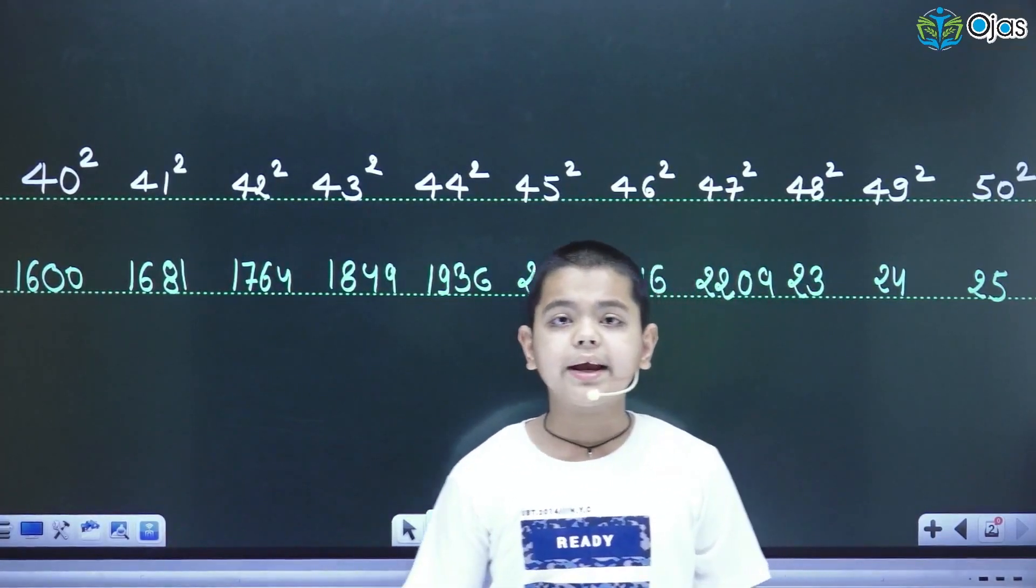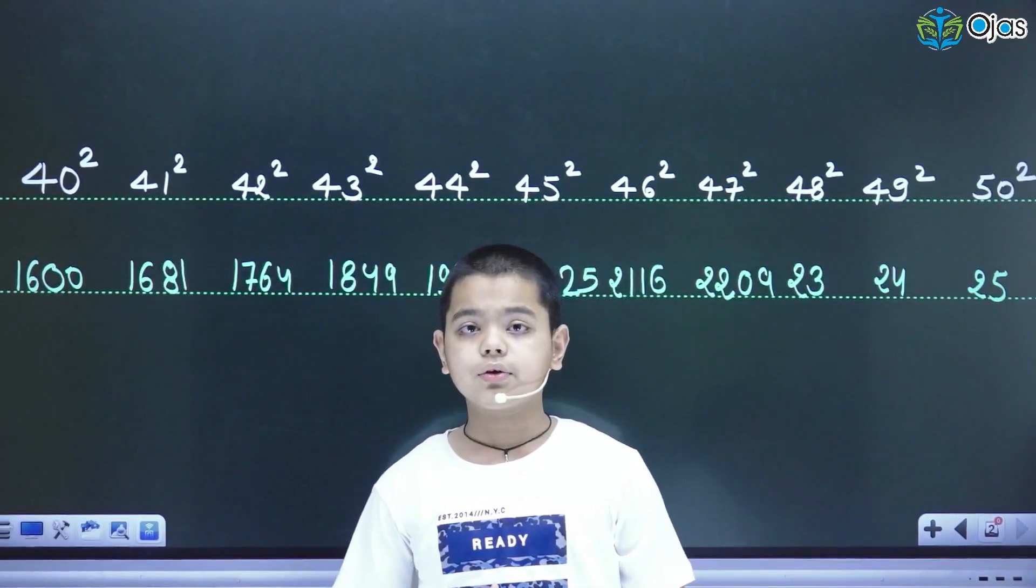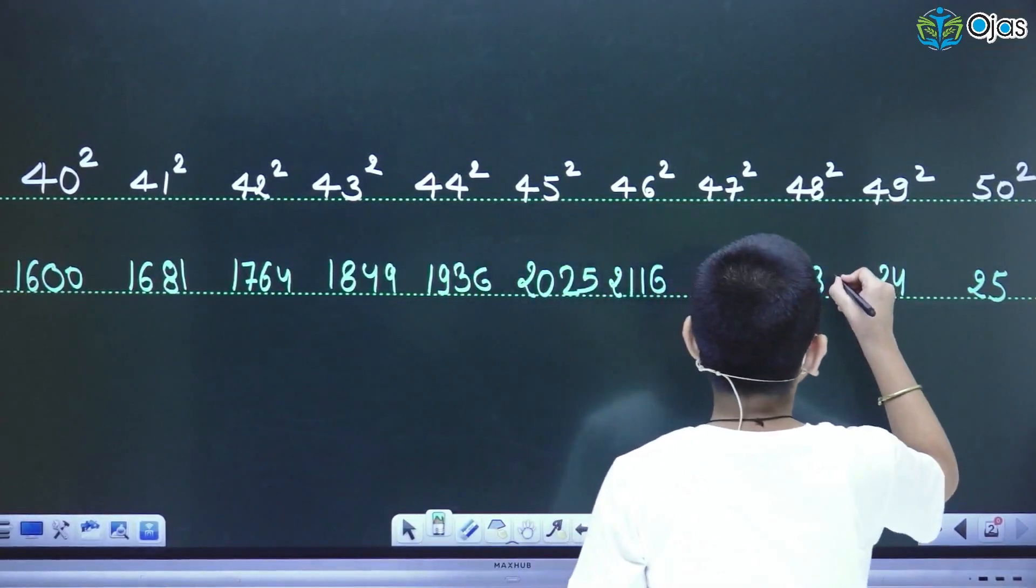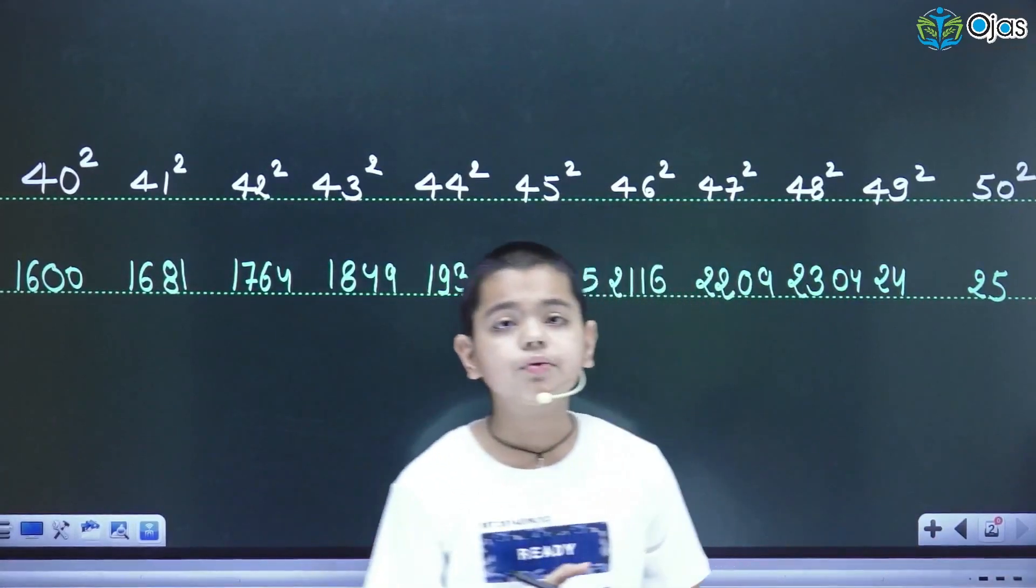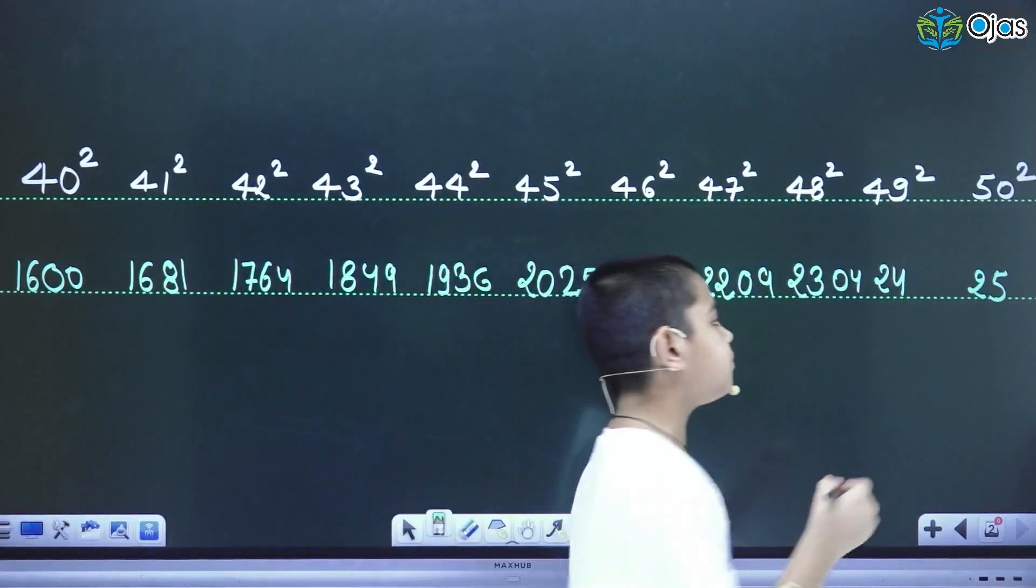Now complement of 8. The complement of 8 is 2 and the square of 2 is 4, so we will write here 04. Now the complement of 9 is 1 and the square of 1 is only 1.